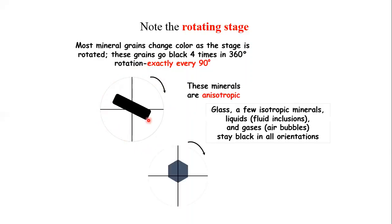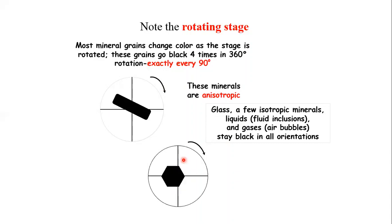Remember that extinction is possessed only by anisotropic minerals. Isotropic minerals, glass, liquids, and gases don't have any phenomenon of extinction — they remain or stay black in all orientations.